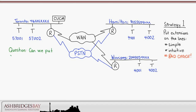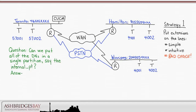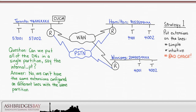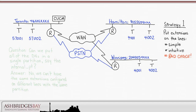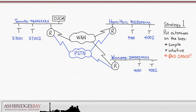Can we put all the DNs in a single partition, say the internal partition? No. We cannot have the same extensions configured on different lines with the same partition. We must use separate partitions to deploy overlapping extensions. Let's deploy a separate internal partition for each site: the TO internal partition for Toronto, the HA internal partition for Hamilton, and the WPG internal partition for Winnipeg.